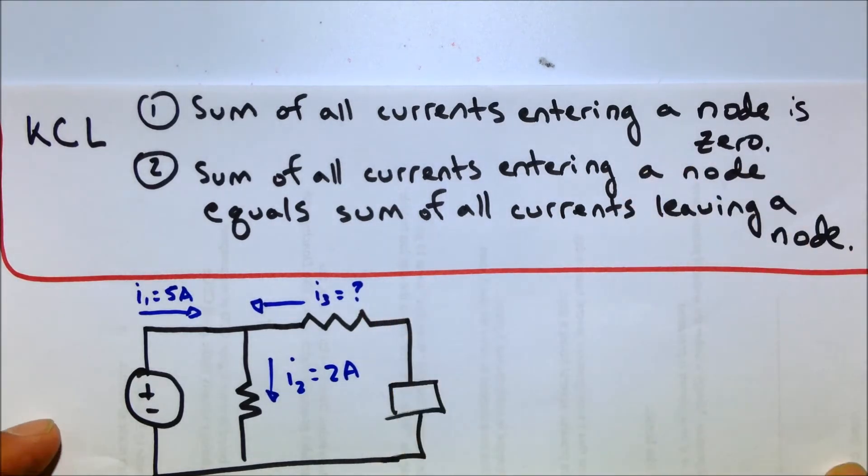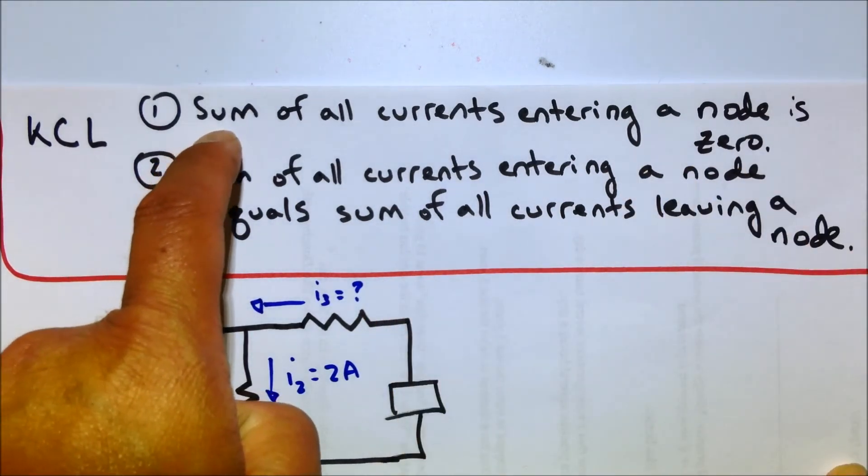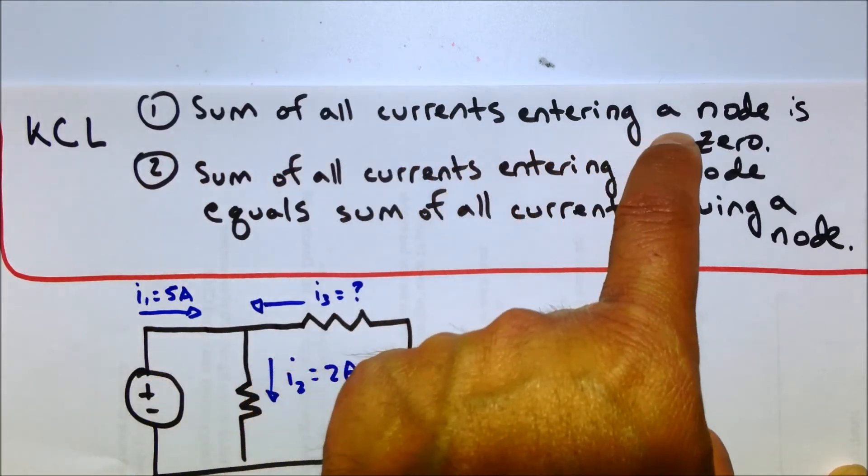There's two different ways. You'll often hear it being said this way: the sum of all currents entering a node is zero.